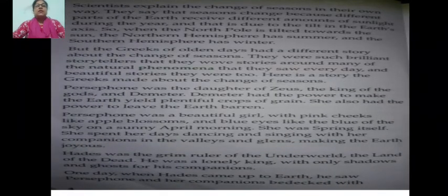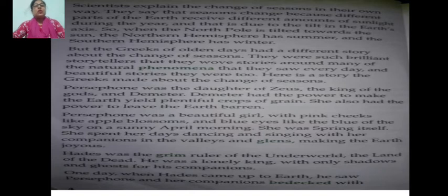Scientists explain the change of seasons in their own way. They say that seasons change because different parts of the earth receive different amounts of sunlight, and that is due to the tilt in the earth's axis. When the north pole is tilted towards the sun — tilted means leaning into a sloping position — the northern hemisphere experiences summer and the southern hemisphere experiences winter. Whereas when the southern hemisphere is in summer, the northern hemisphere experiences winter season.